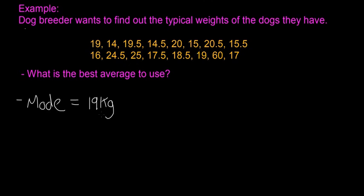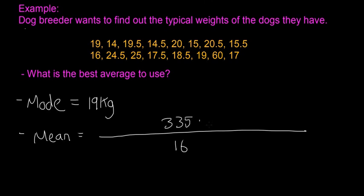Next we're going to look for the mean. The mean is gotten by adding all of them together and then dividing it by the amount that there are. So that's divided by 16, and if you add them all together, I'm not going to do them all manually, it's 335.5 divided by 16, and that's going to give us an answer of 20.97 kilograms.